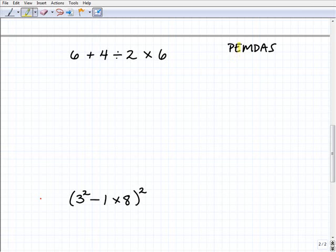Are there any E's or exponents, powers? Nope. Is there any multiplication or division? Yes, there is. So which comes first from left to right? Well, the division does. So we have to tackle this part of the problem first. So this will be 6 plus 4 divided by 2 is 2 times 6.